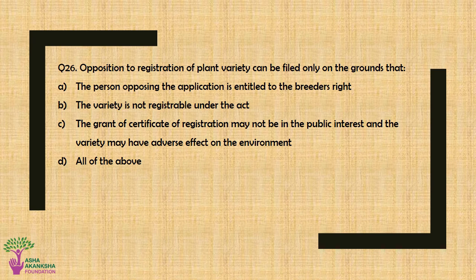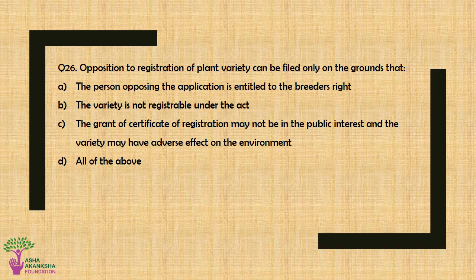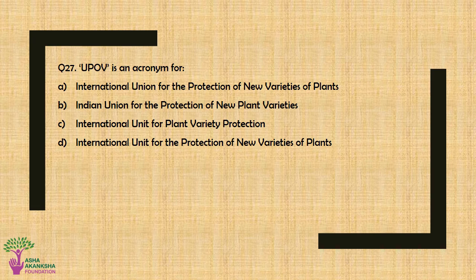Question No. 26: Opposition to registration of a plant variety can be filed only on the grounds that — Option A: The opposing person is entitled to the breeder's right, Option B: The variety is not registrable under the Act, Option C: The grant of certificate may not be in the public interest and the variety may have adverse effect on the environment, or Option D: All of the above. The correct answer is Option D — All of the above.